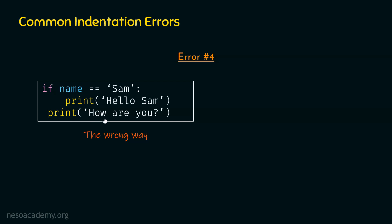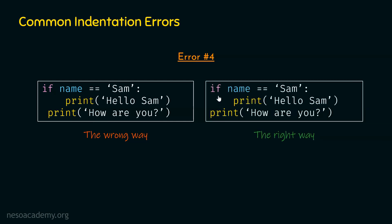So the correct code is: if name equals Sam, then print hello Sam — that statement is part of the if block — and print how are you is not indented, so it is not part of the if statement. This is the correct way of writing the code. You have now seen all the different types of common indentation errors which we can make while writing code.